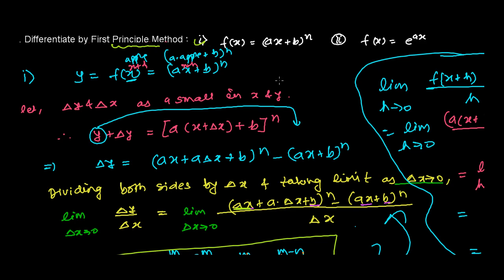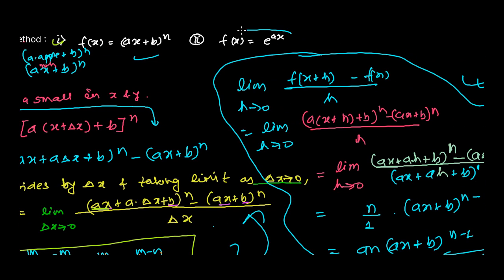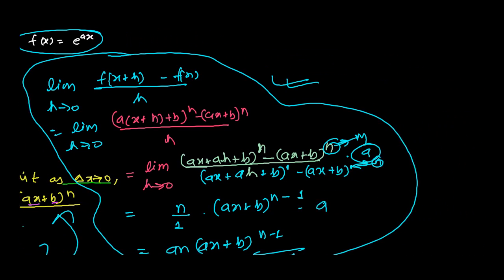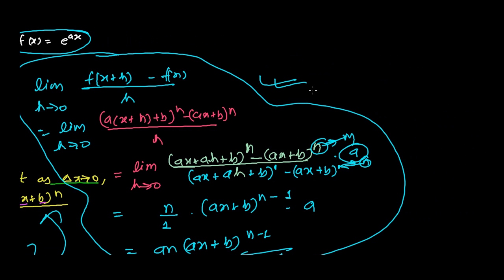In the previous video, we differentiated by the first principle method these two questions. Now let's talk about this: f(x) = e^(ax). Though it looks very simple, it's a little difficult if you don't know the concept. So our function here is f(x) = e^(ax).